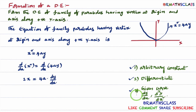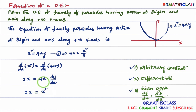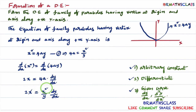Then we use the third step: we use the given curve or dy/dx. From the given curve x² = 4ay, can we write 4a? Yes — 4a = x²/y. So in the differentiated equation 2x = 4a·(dy/dx), in place of 4a, I will write x²/y. So: 2x = (x²/y)·(dy/dx). Now the arbitrary constant is eliminated.